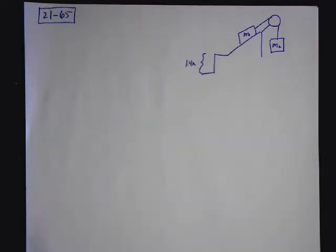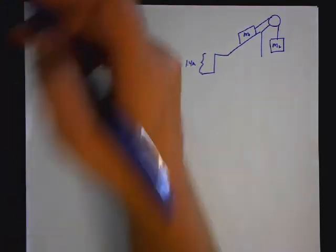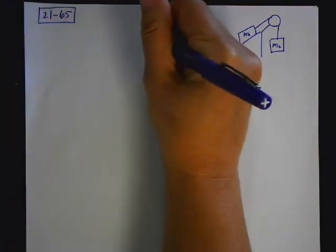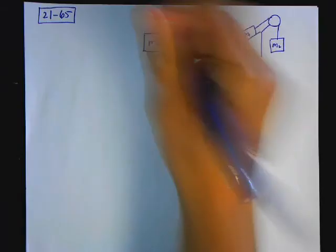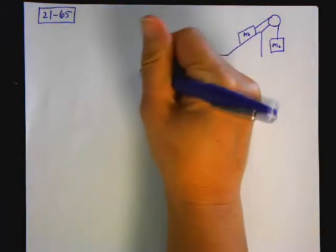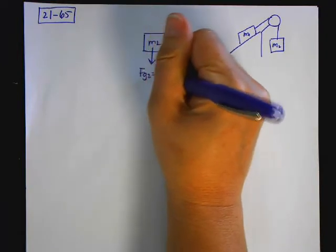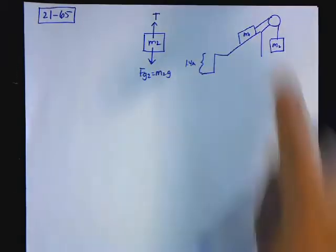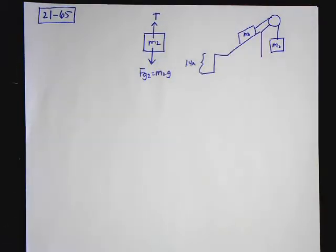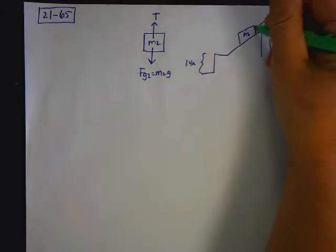So what you do first is you draw your individual free body diagrams. So the one block, M2, this one's easy. You have the weight acting down, FG2, and then you have the tension going up. So remember, this is one rope. So one rope means one tension.